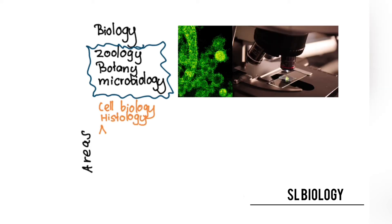Then the next area is histology. Histology is the study of tissues. Organisms are made up of cells arranged into tissues. In humans, we have epithelial tissues, muscle tissues, and connective tissues. In plants there are vascular tissues and epithelial tissues. The study of tissues is called histology.